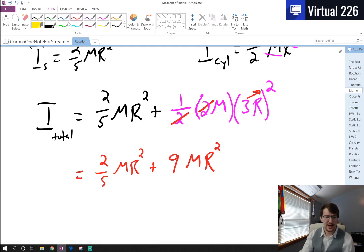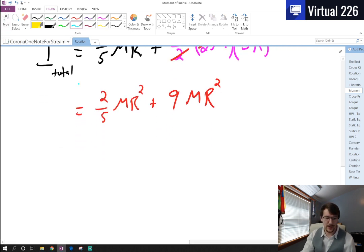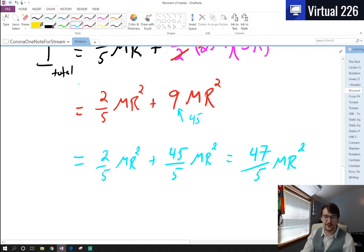If we try to add these together with a common denominator of five, nine times five is 45, so I could say two-fifths MR² plus 45-fifths MR², which is just the number nine, equals 47-fifths MR². That is the total moment of inertia.